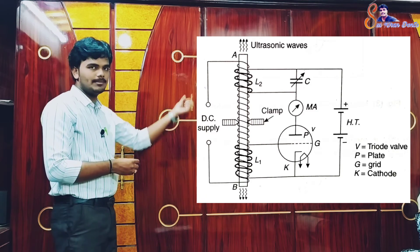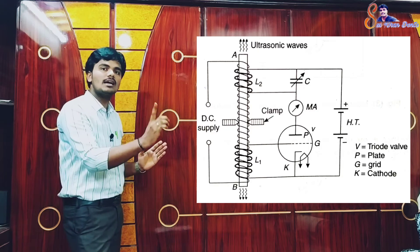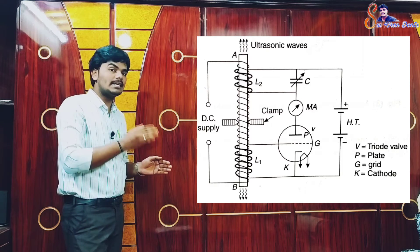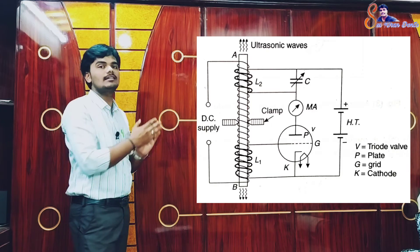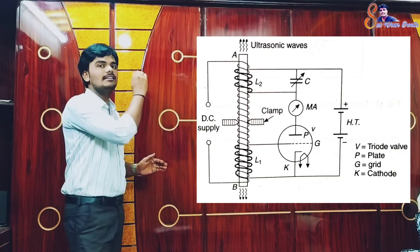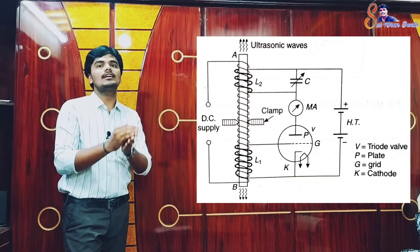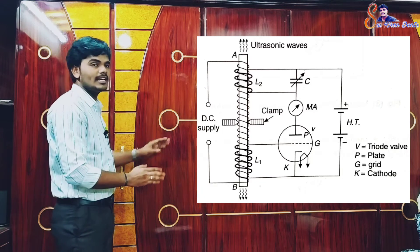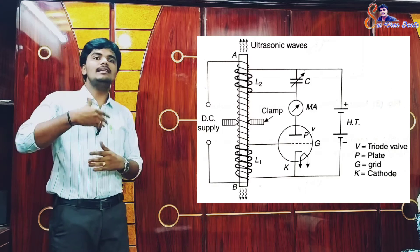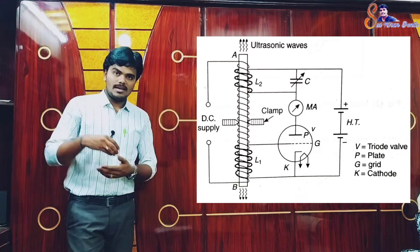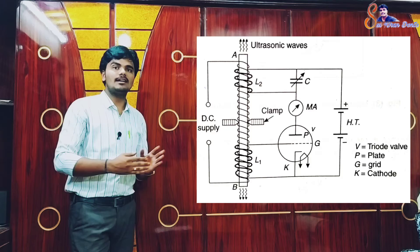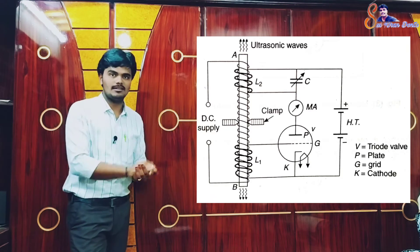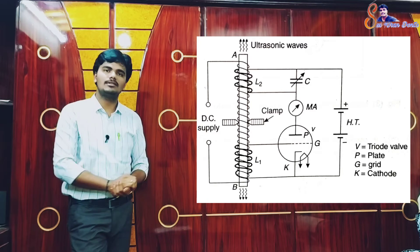By passing direct current through this coil, a magnetic field is created which permanently magnetizes the rod. There are two other coils L1 and L2 which are wrapped around the rod as shown in the figure. The coil L2 is connected in the plate circuit of a triode valve, while coil L1 is connected in the grid circuit.